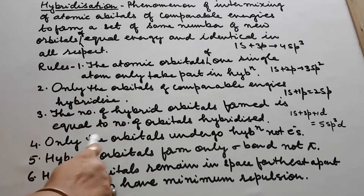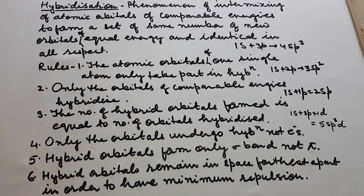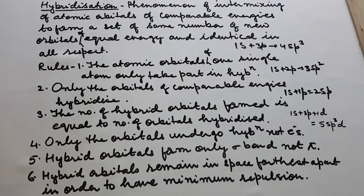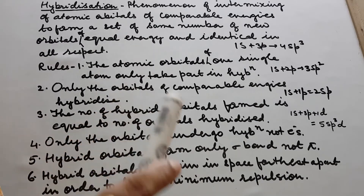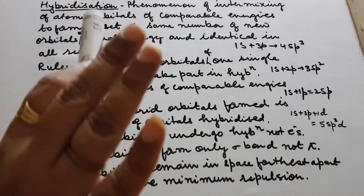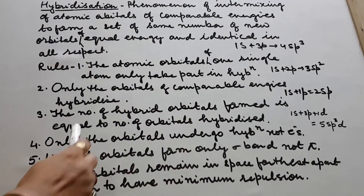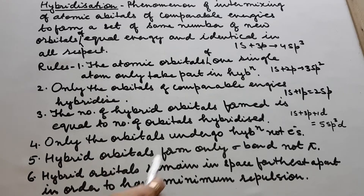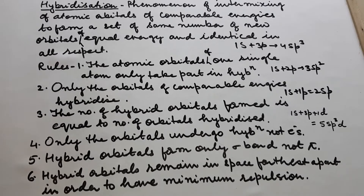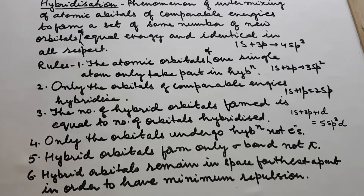Only the orbitals undergo hybridization, not electrons. It is totally a hypothetical concept. It is only the orbitals that are hybridized, not the electrons — point to be noted. Hybrid orbitals form only sigma bonds and not pi bonds. It is an assumption that hybrid orbitals always form sigma bonds and not pi bonds.